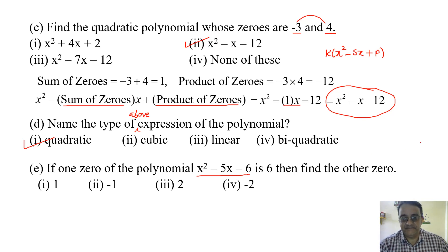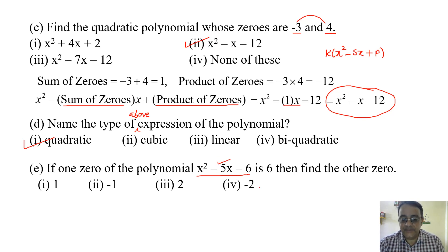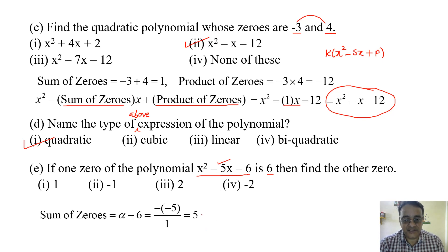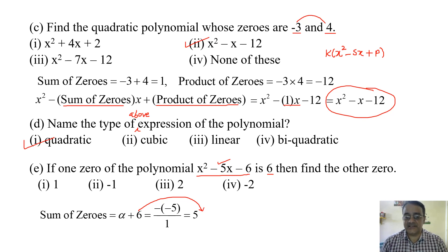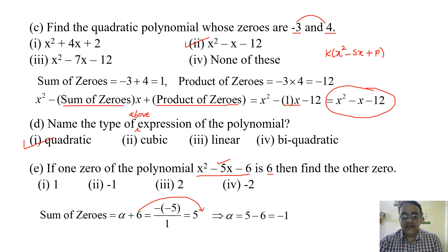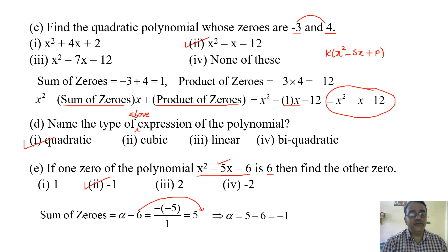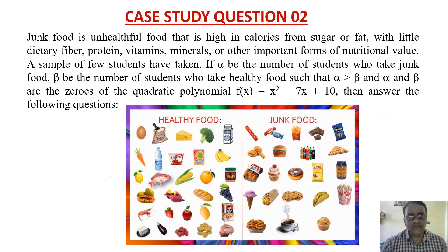Here b is minus 5. Let the other zero be alpha. So alpha plus 6 equals minus of minus 5 upon 1, that is 5. Shifting 6 to the other side: alpha equals 5 minus 6, which is minus one. The correct option is the second one.